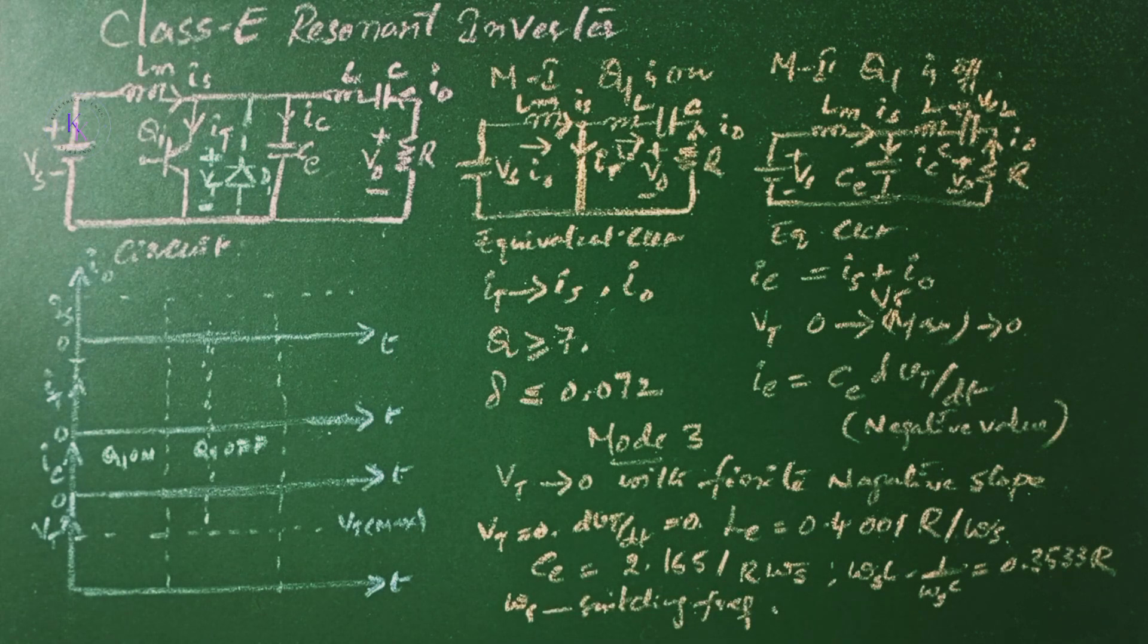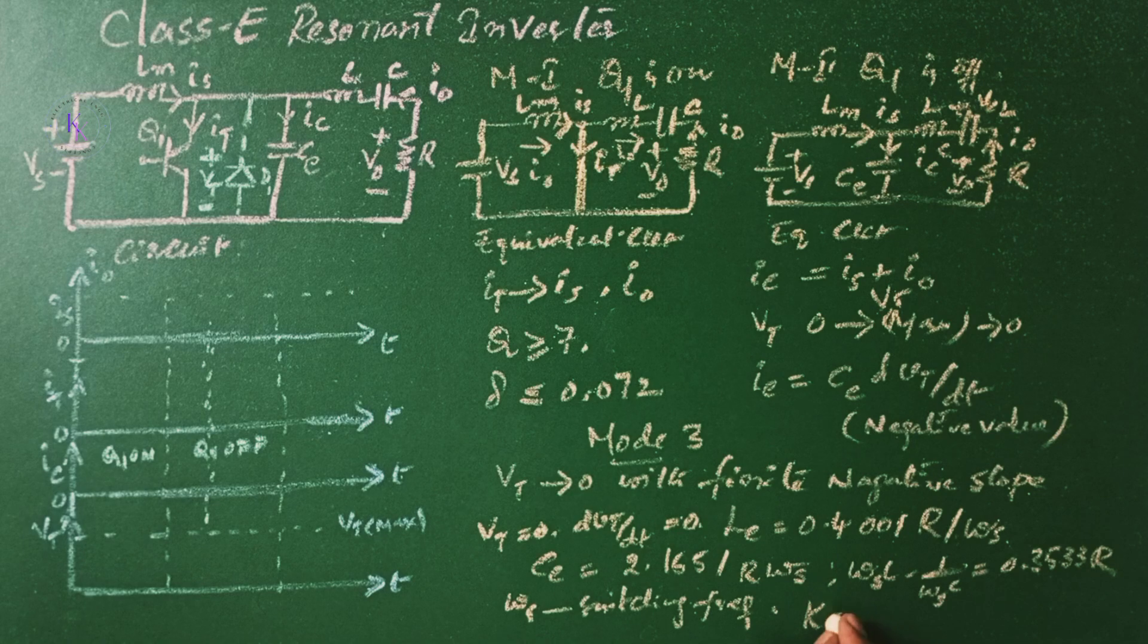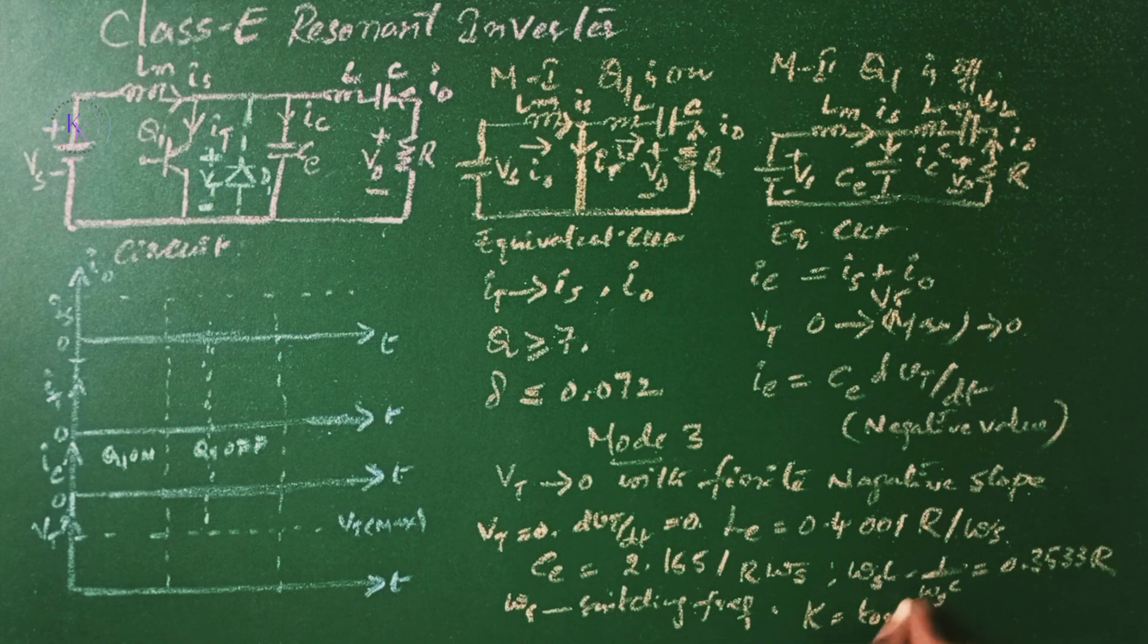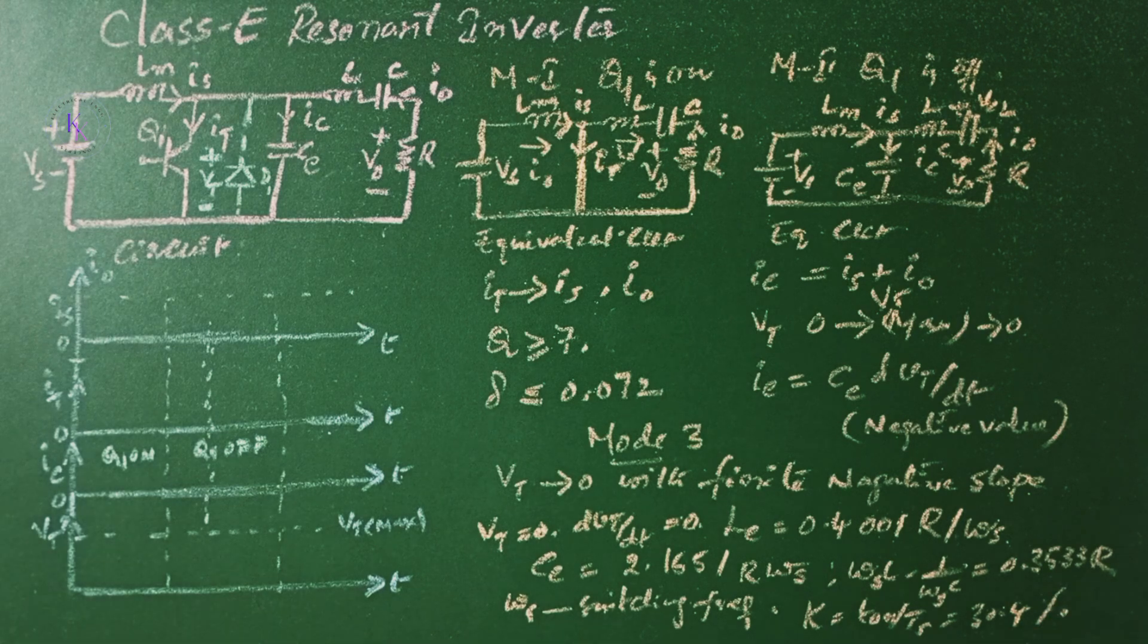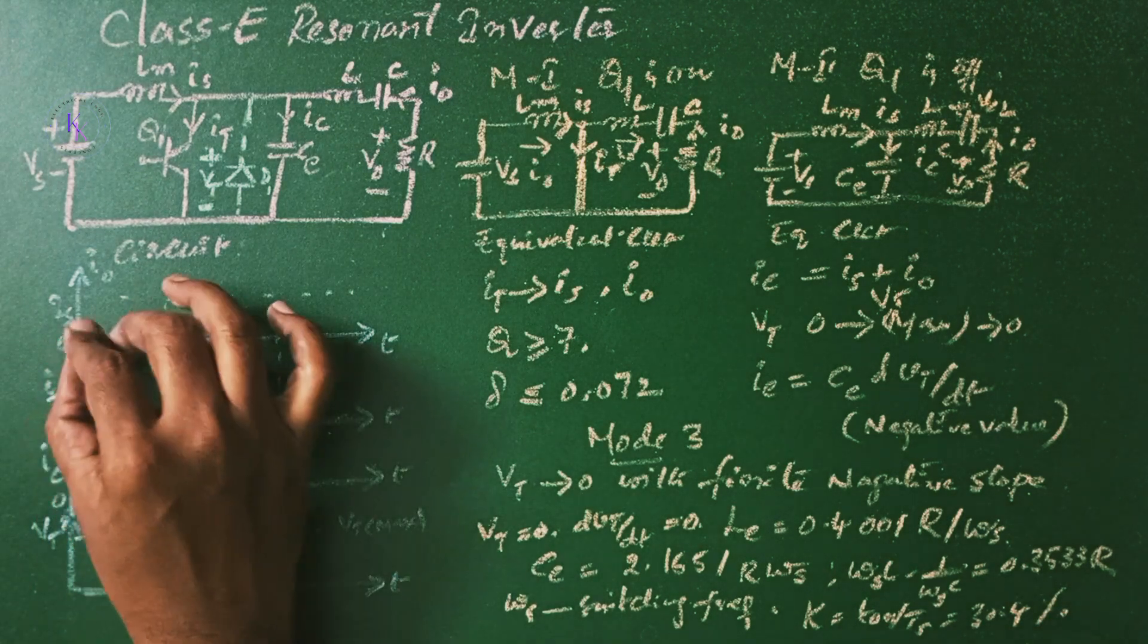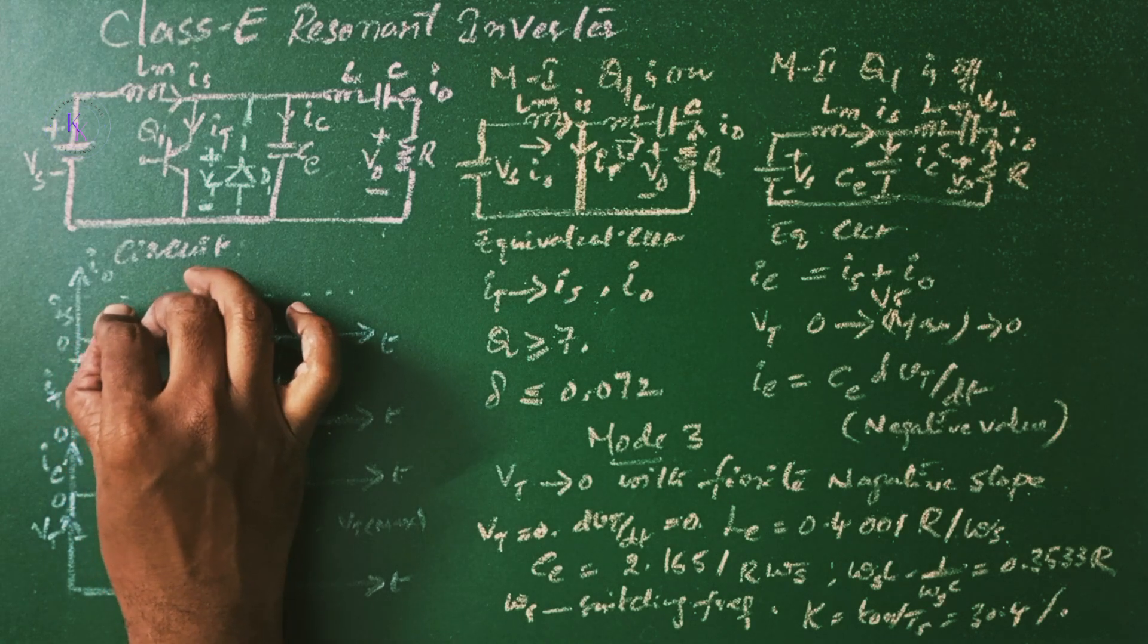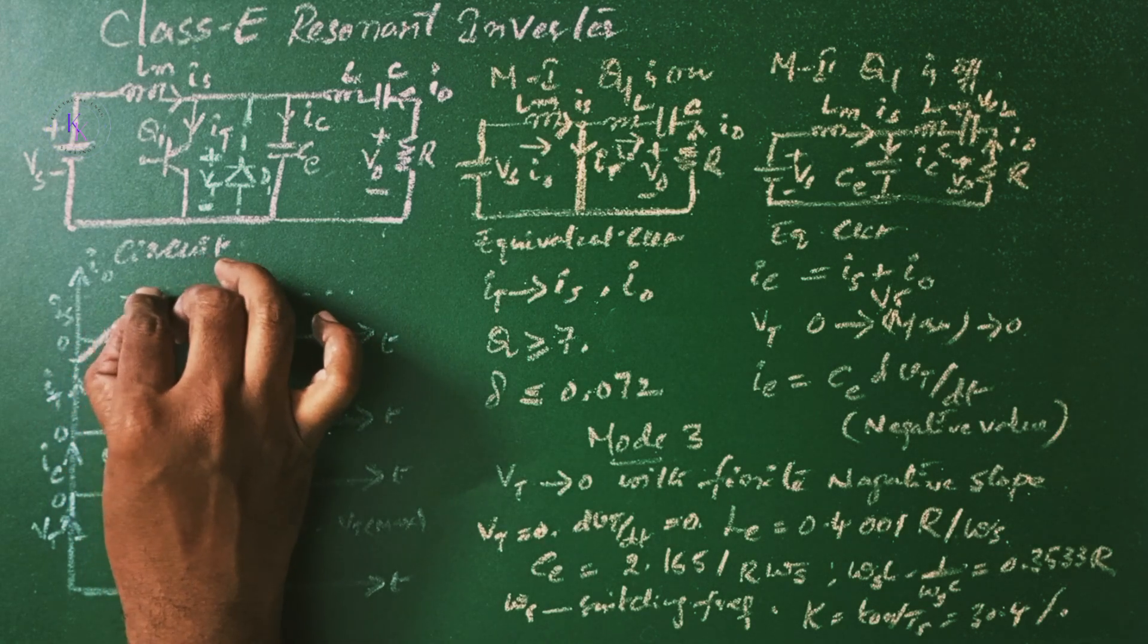And the duty cycle k is given by T on divided by T s, that is 30.4 percent. Now, I0 during the turn on period will rise to IS and starts falling.